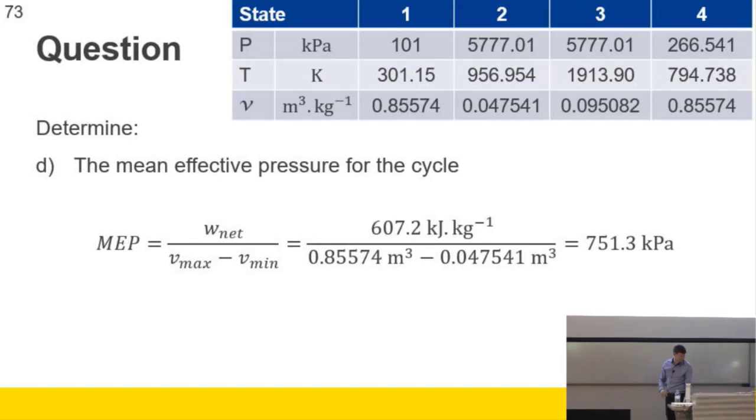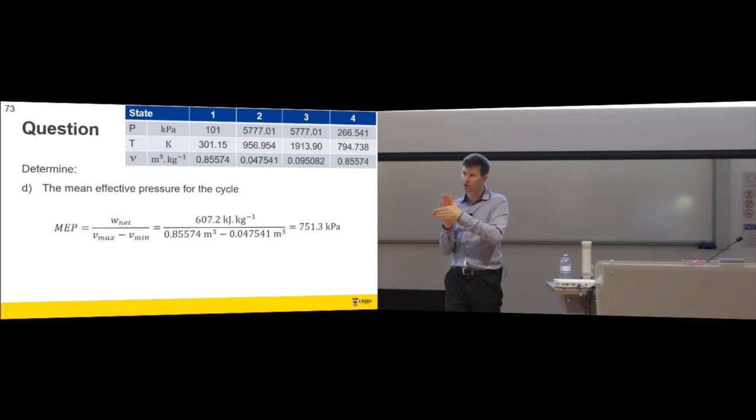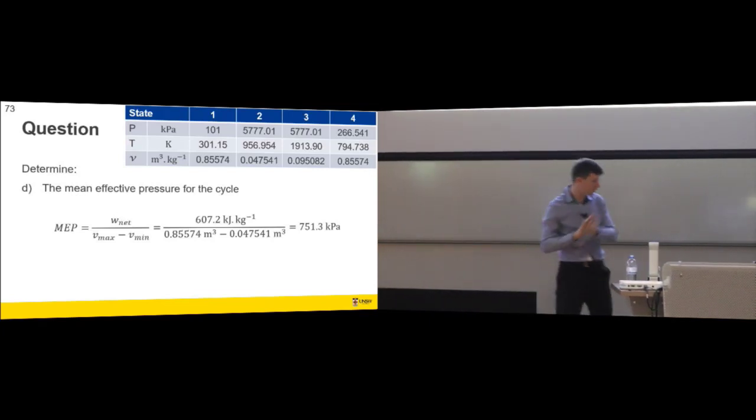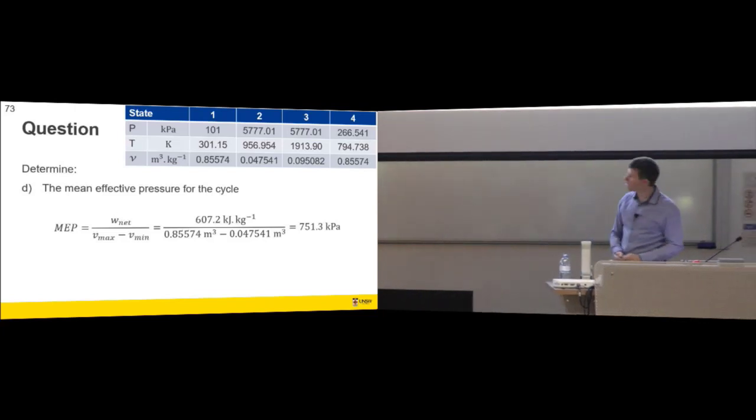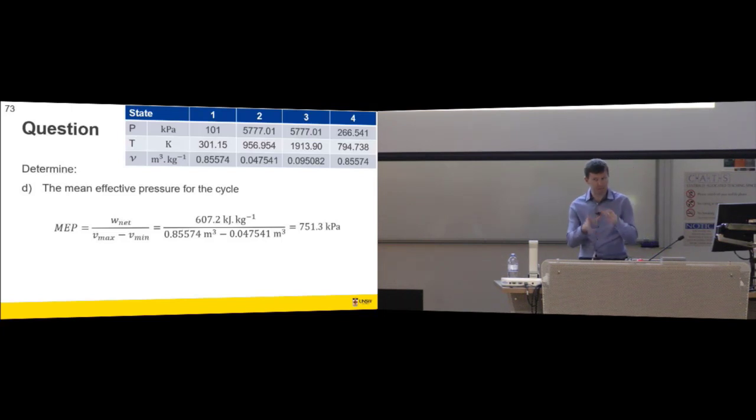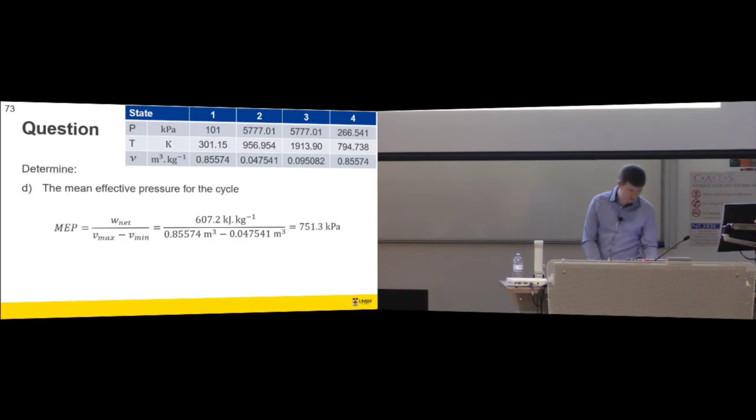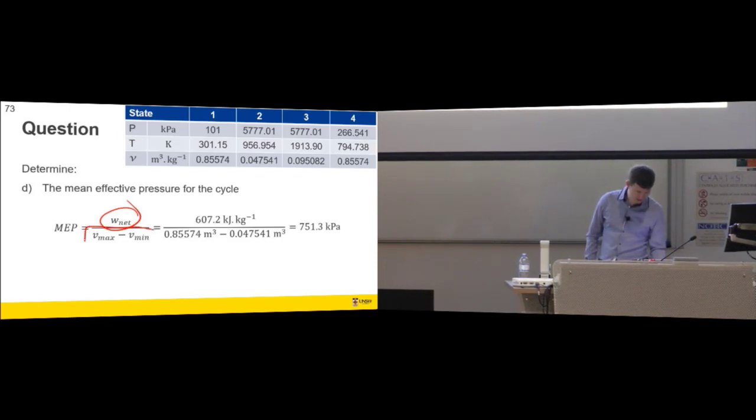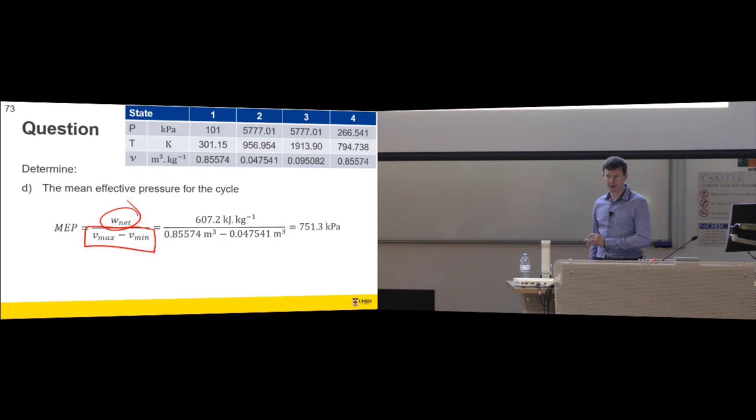Mean effective pressure for the cycle. So the mean effective pressure is what the pressure would have to be if the pressure was held constant during the power stroke. So while the cylinder was expanding with the hot, high pressure gas behind it, mean effective pressure would be what would that pressure have to be, that mean, that average pressure, which is the work coming out of the cycle, divided by the swept volume.